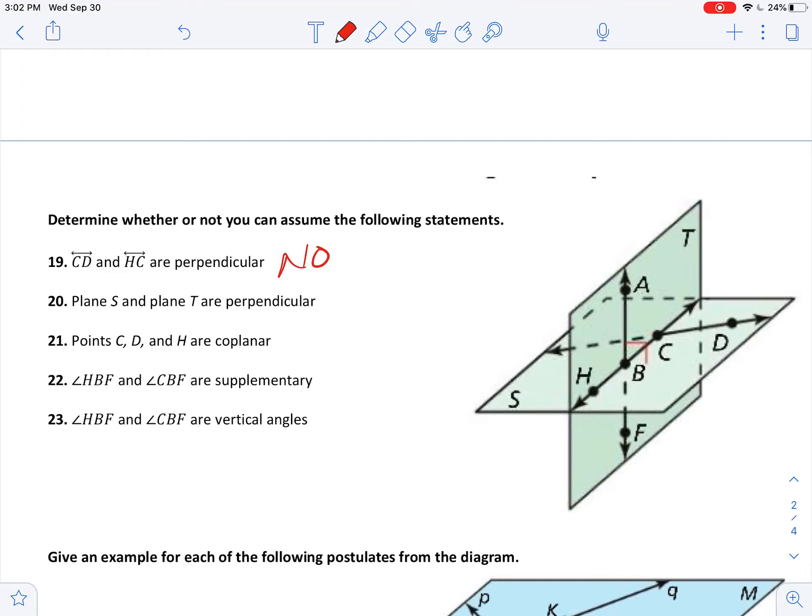Number 20, plane S and plane T are perpendicular. Again, that means they form a right angle. That's our symbol for perpendicular, that upside-down T. And I see a right angle symbol here, and it appears that that's telling me my planes are actually perpendicular. They form a right angle.